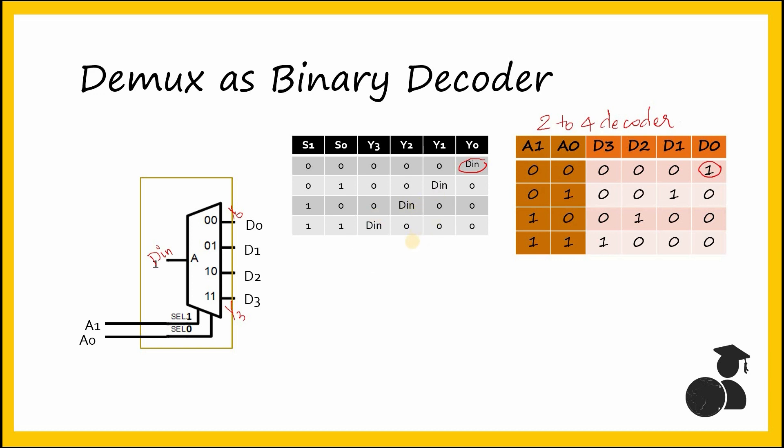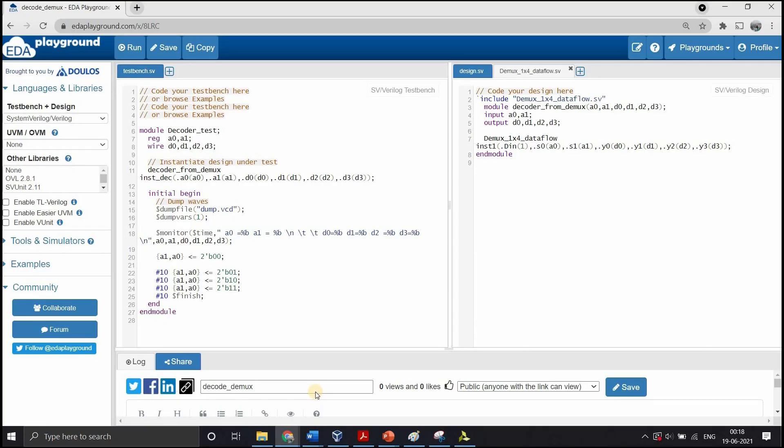Let's see the Verilog code for this and verify whatever we have done is correct. I have opened the EDA Playground platform and this is the code for generating a decoder from a demultiplexer. The code is very simple. We just have instantiated the demultiplexer and for the data input we have given 1, and for the select lines A0 and A1 the inputs of the decoder, and for the outputs of the demultiplexer we have assigned the outputs of the decoder. The only thing that's new here is that we've included the demultiplexer Verilog code by giving this tick include dmux dataflow sv, and we have reused the demultiplexer code that we had written in the previous video.